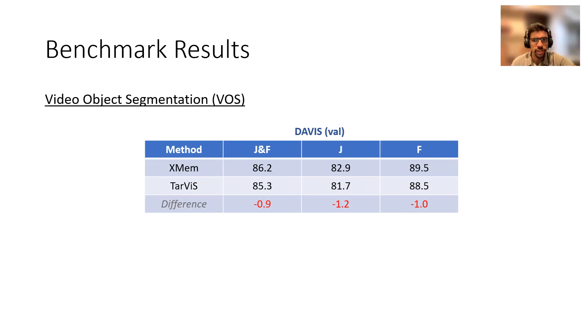Moving on to video object segmentation, here we see that Tarvis performs competitively but compared to the SOTA method, it lags behind by 0.9% JNF.